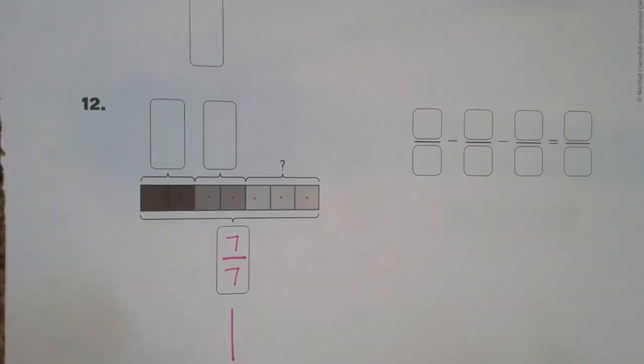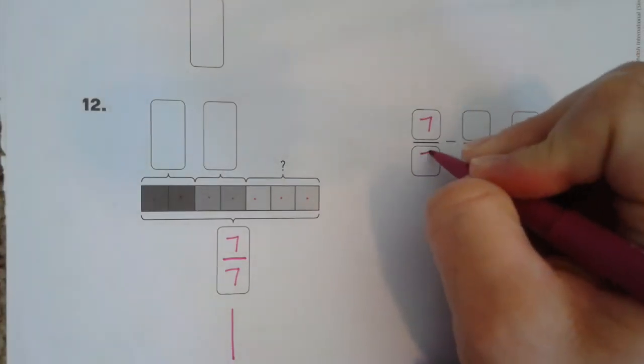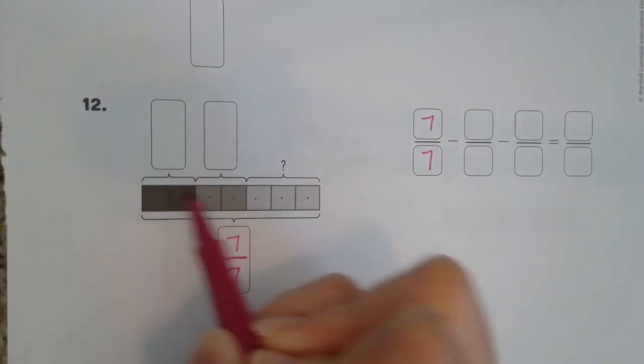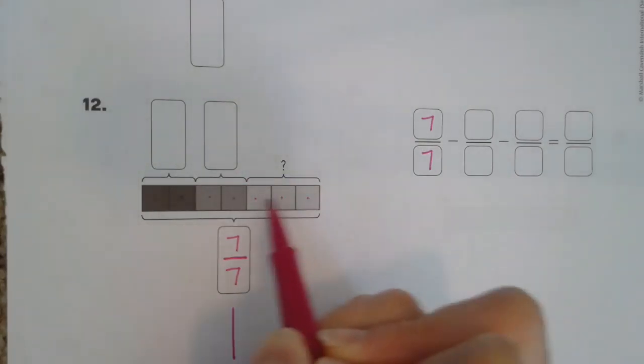Now, we are going to start with 7 sevenths up here, and we're going to subtract this part. And then we're going to subtract this part, and we're going to see how much we have left.